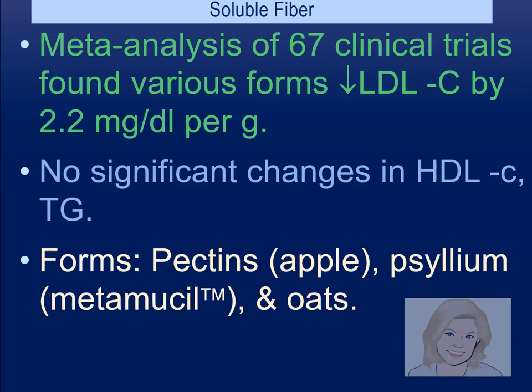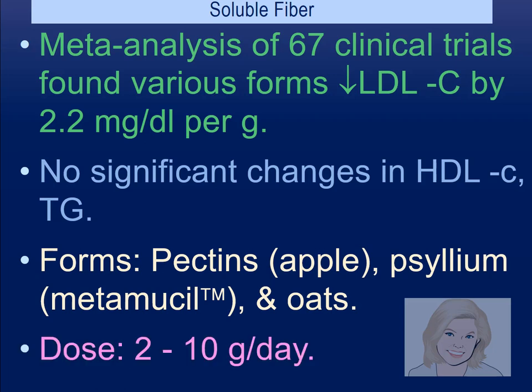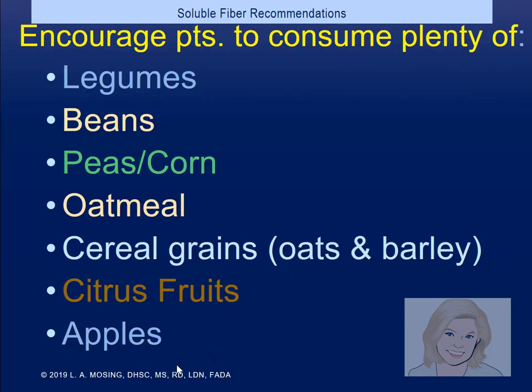Apples, oats, and beans are good sources of soluble fiber. For patients who have trouble getting enough, Metamucil — psyllium — helps boost fiber intake. Introduce it slowly to avoid GI distress. 2 to 10 grams of psyllium is helpful. Legumes and beans are plant-centered foods high in soluble fiber. We're always emphasizing more plant than animal.